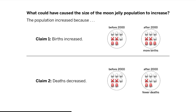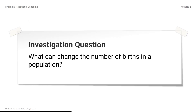What could have caused the size of the moon jelly population to increase? You determined there must have been more births than deaths since the year 2000 in order to cause the population to increase. They are now trying to determine whether this happened because births increased or because deaths decreased. Learning what can cause the number of births to increase or the number of deaths to decrease will help you determine what happened in the moon jelly population.